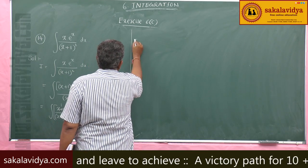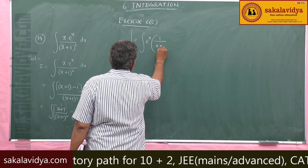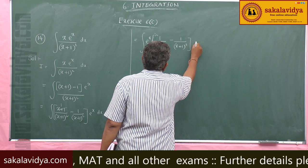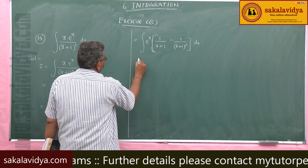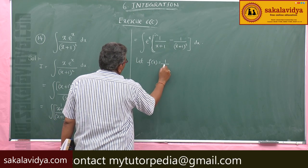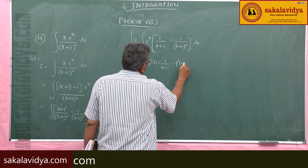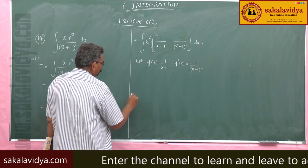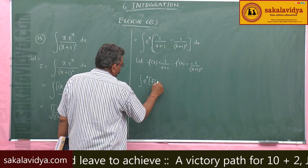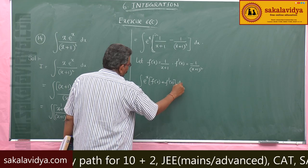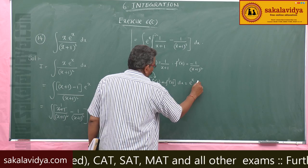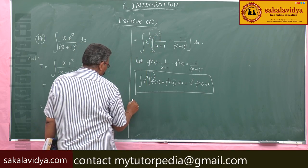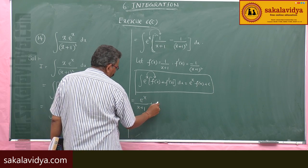This can be written as integral e power x of 1 by x plus 1, minus 1 by x plus 1 whole square, dx. Let f of x equal to 1 by x plus 1, that means f dash x is minus 1 by x plus 1 whole square. This comes under the recurrence formula: integral e power x into f of x plus f dash x dx equals e power x into f of x plus constant of integration. Therefore, the answer is e power x by x plus 1 plus constant of integration.